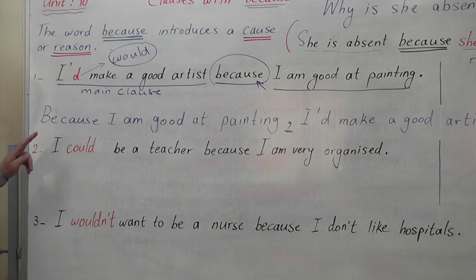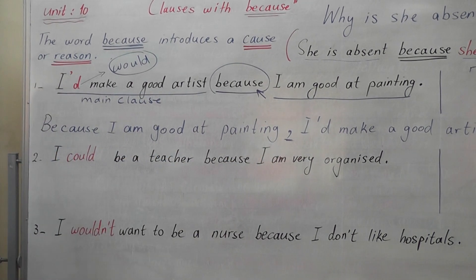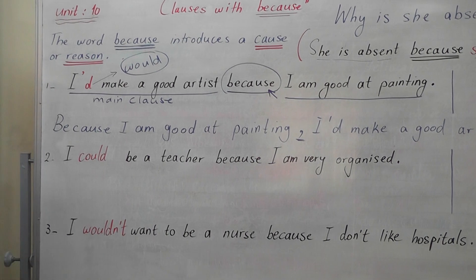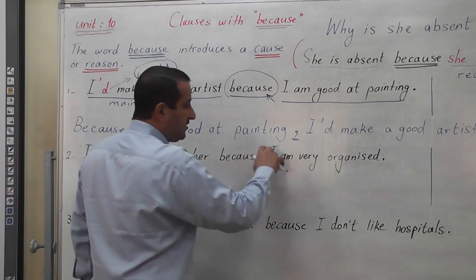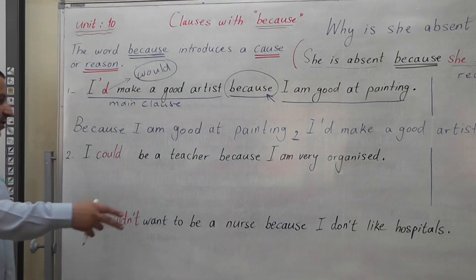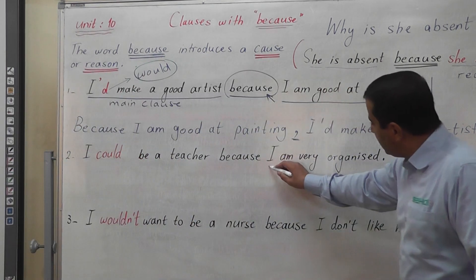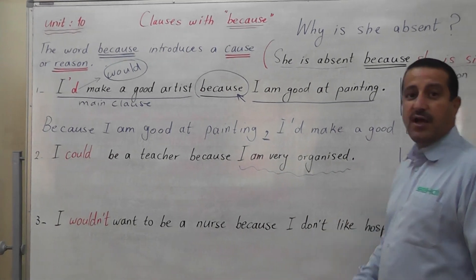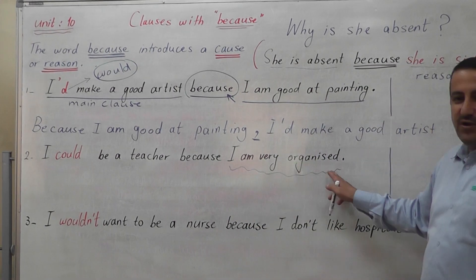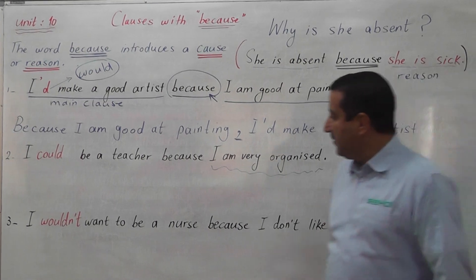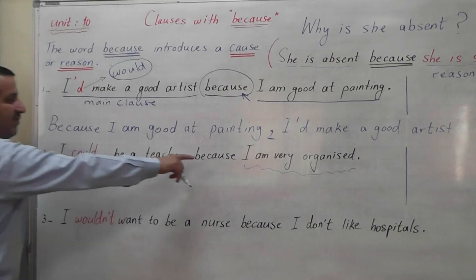Looking at the second example: 'I could be a teacher because I am very organized.' This sentence also has two independent clauses. 'I could be a teacher' is the main clause, and 'I am very organized' is the second clause — it is the reason why I could be a teacher. Why could I be a teacher? Because I am very organized. We can also start with BECAUSE at the beginning.